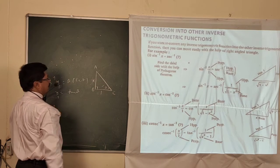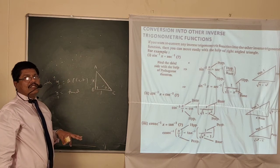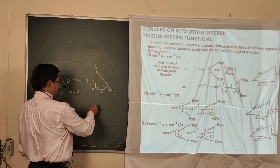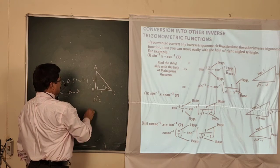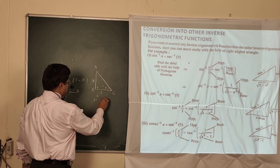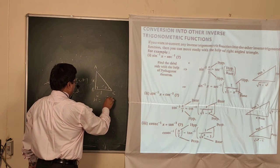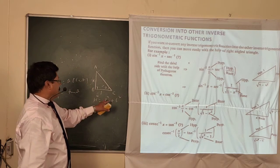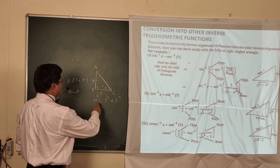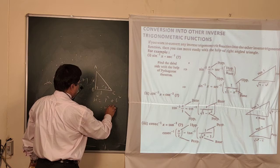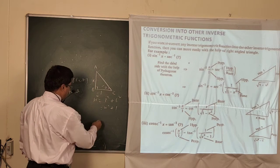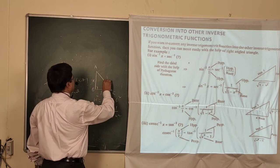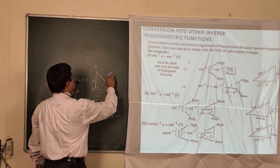Now you just find out the hypotenuse using Pythagoras theorem: H² = P² + B² = x² + 1. So your hypotenuse is √(1 + x²). Now in this, you want to express in terms of sin. Sine θ is perpendicular upon hypotenuse.